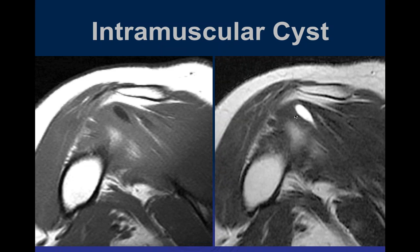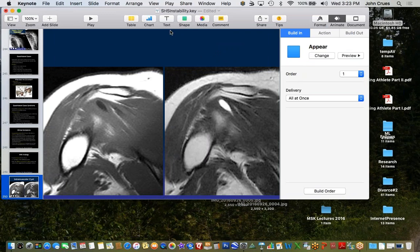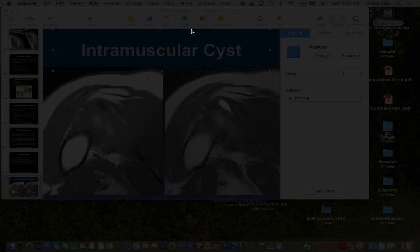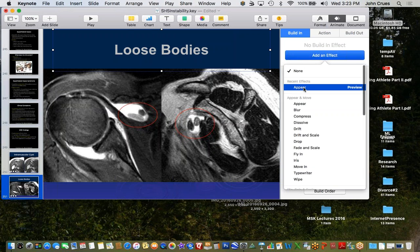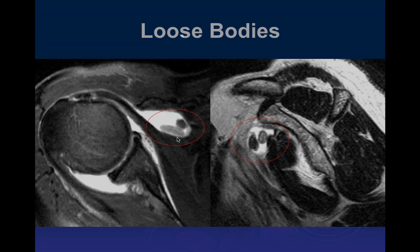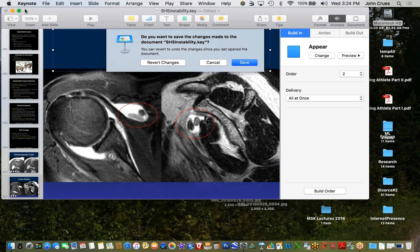You can also get intramuscular cysts, which we can see here. Other things to comment on in your report include loose bodies, which are definitely important to mention — especially in the setting of intermittent shoulder symptoms — as these may need to be removed if they're thought to be the cause of symptoms.